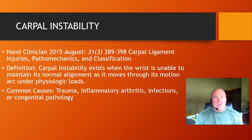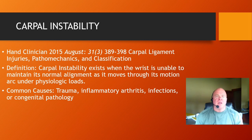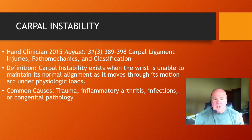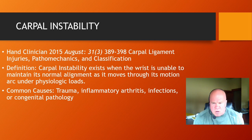According to a study published in 2015 in the journal Hand Clinics, discussing carpal ligament injuries, the pathomechanics of injuries to the carpal ligaments, and the classification of carpal instability — they define carpal instability as existing when the wrist is unable to maintain its normal alignment as it moves through its motion arc under physiologic loads. The wrist has normal and established movement patterns as it goes through its normal ranges of motion, including flexion, extension, radial and ulnar deviation, and combinations of all those movements.